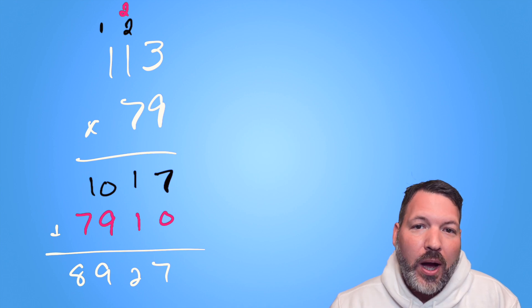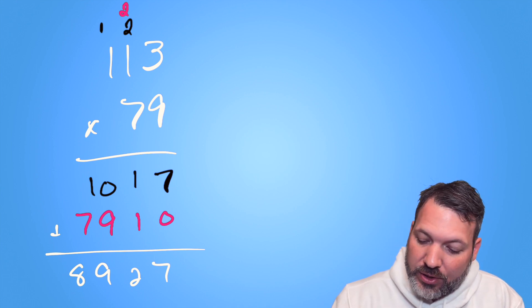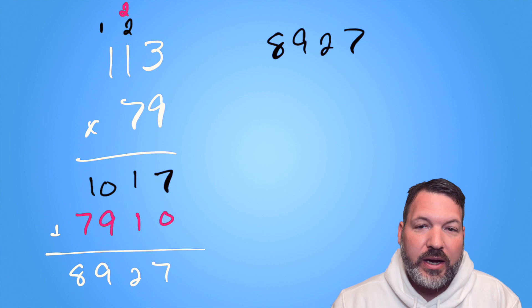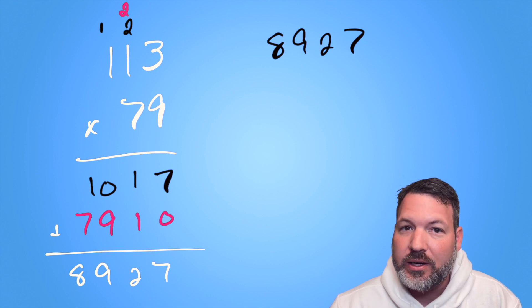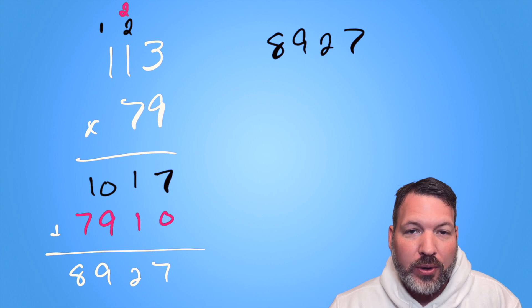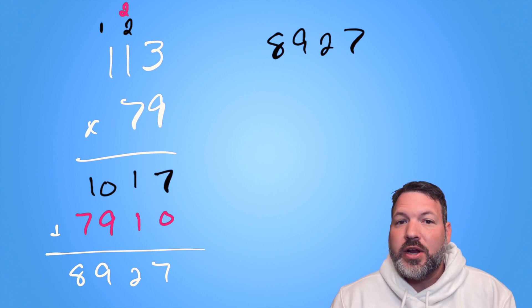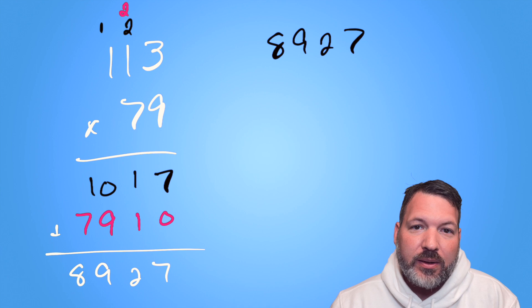On the other hand, if we take the product of that algorithm, if we take the result, in this case, 8,927, and we said, hey, work your way backwards to the two factors that were multiplied together to make 8,927, that is a much more difficult and time-consuming process. Because even though we have a division algorithm, for example, we don't know what number to start dividing by.